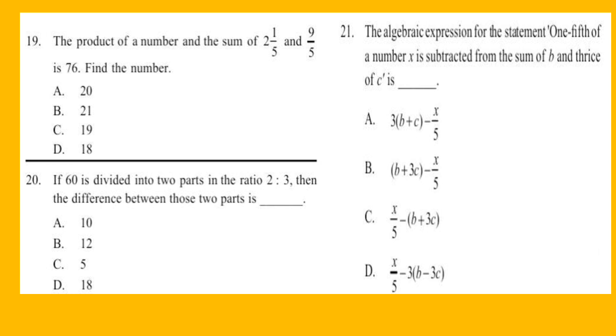Question 20: If 60 is divided into two parts in the ratio 2:3, then the difference between those two parts is blank.